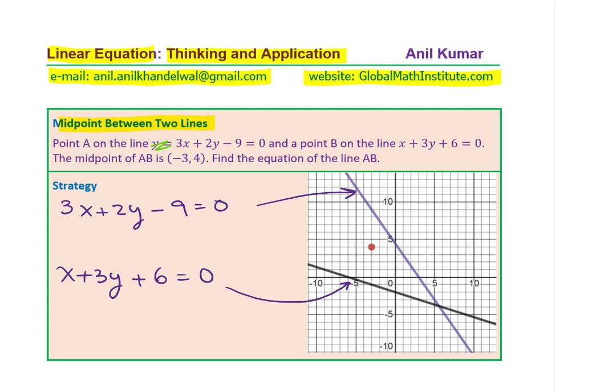We are given a midpoint M in between these two lines. And the idea is that we need to find point A which is on the line 3x plus 2y minus 9, and the point B on the other line. And then connect these two points which will go through the midpoint. Find the equation of that particular line.